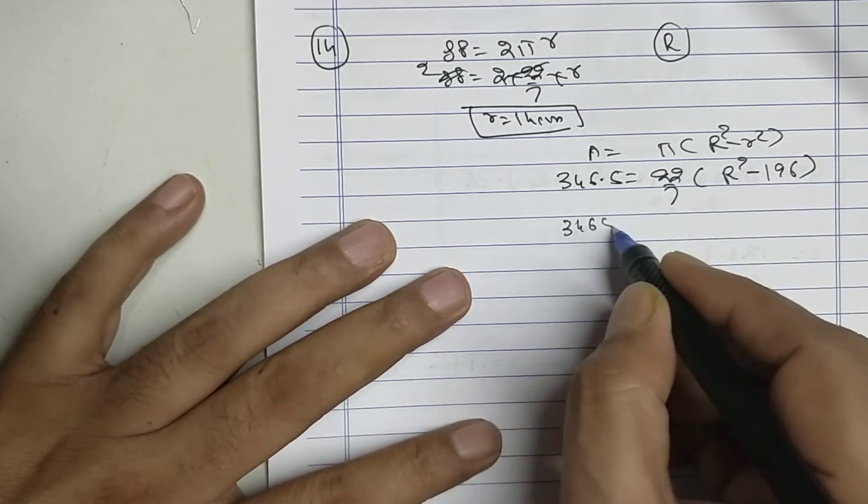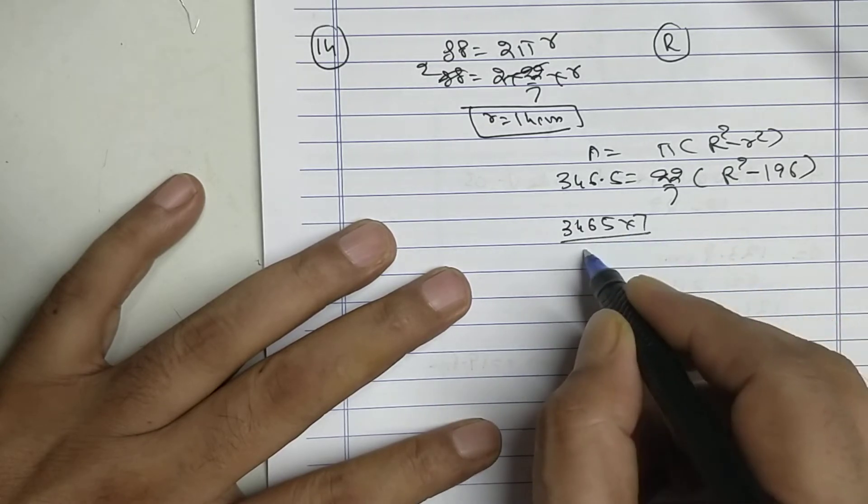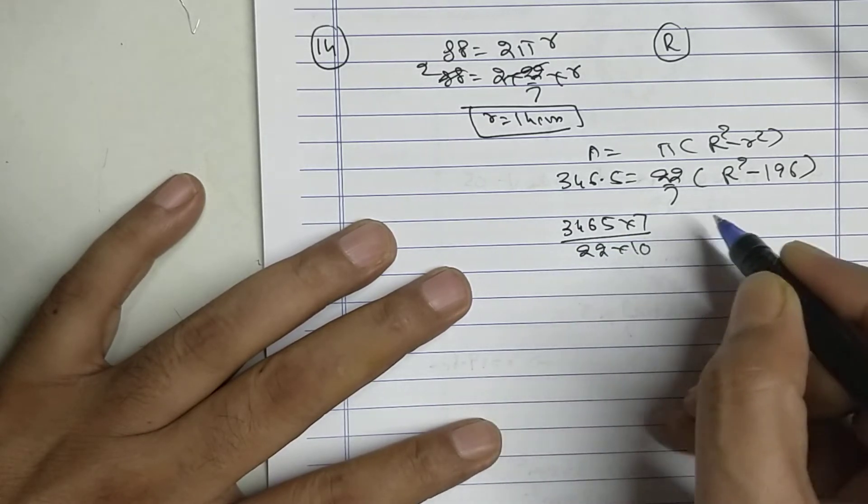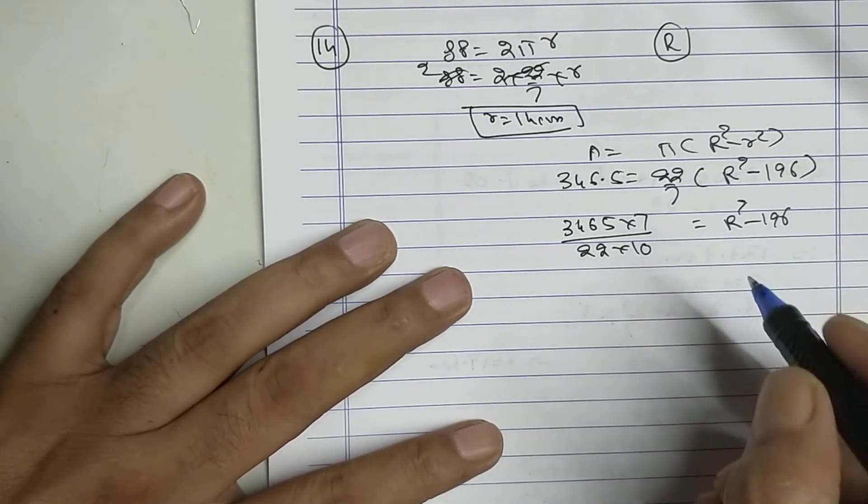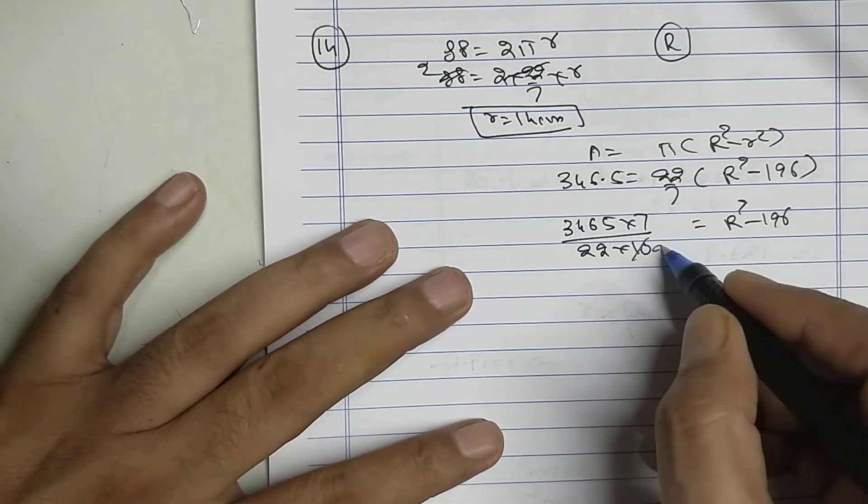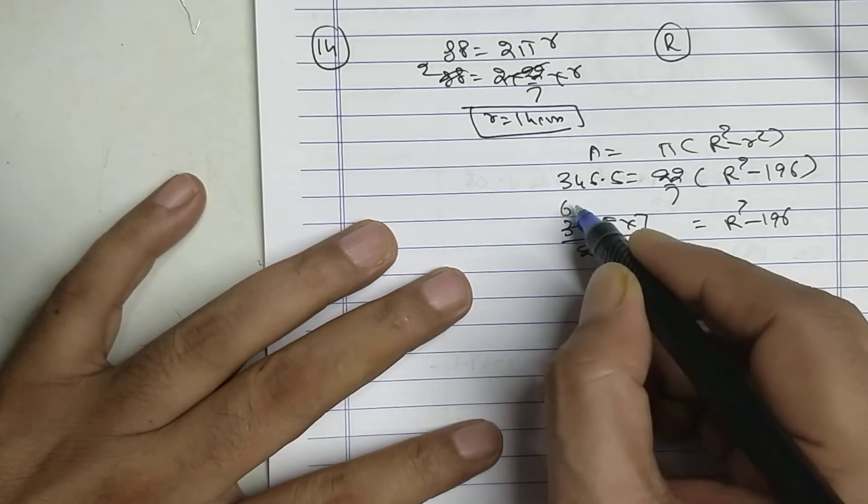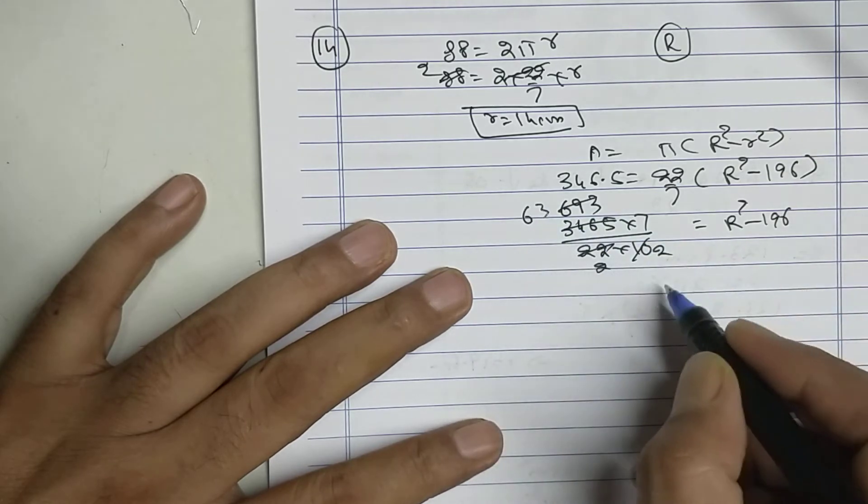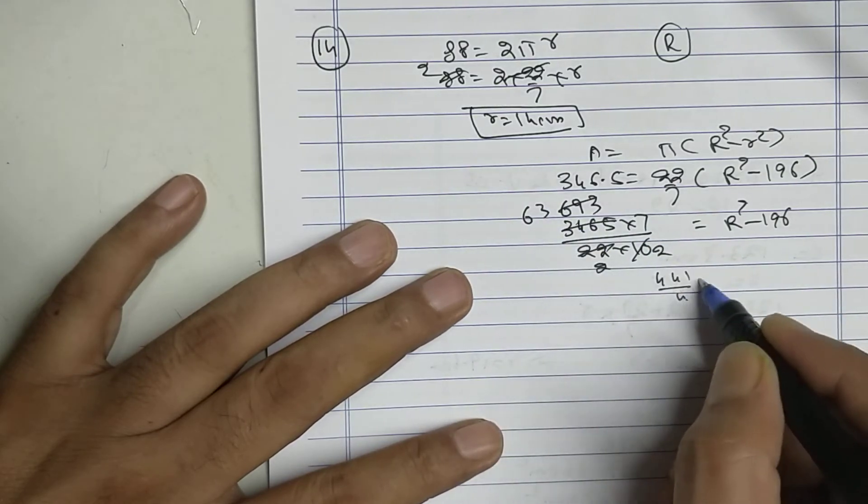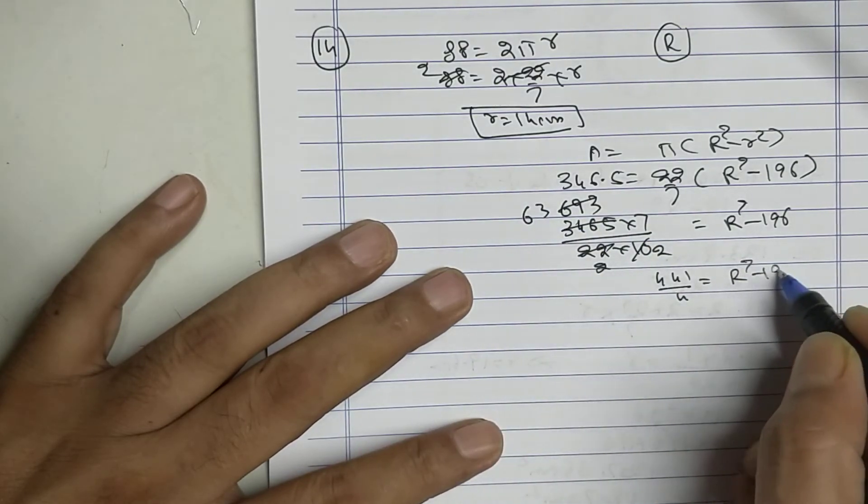3465 equals... cancel π terms... 441 upon 4 equals R² minus 196.